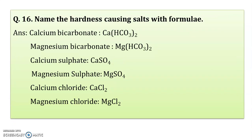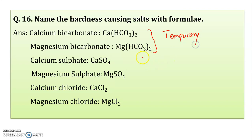Name the hardness-causing salts with formulae. Mostly there are six salts which cause hardness to water: calcium bicarbonate Ca(HCO₃)₂, magnesium bicarbonate Mg(HCO₃)₂, calcium sulfate CaSO₄, magnesium sulfate MgSO₄, calcium chloride, and magnesium chloride. These six salts cause hardness to water. Out of these, the two bicarbonate salts cause temporary hardness, while the sulfates and chlorides of calcium and magnesium cause permanent hardness.